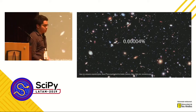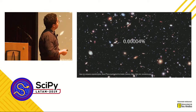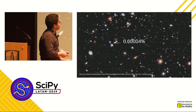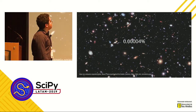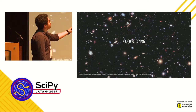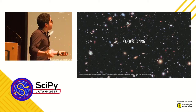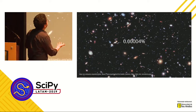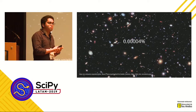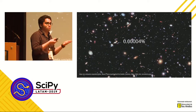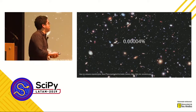To grasp the scale: this is a picture of a tiny square of sky — 0.000404% of the entire sky — and look how many objects there are. You need automated systems to be able to classify all of these objects. That's what the paper wanted to focus on.